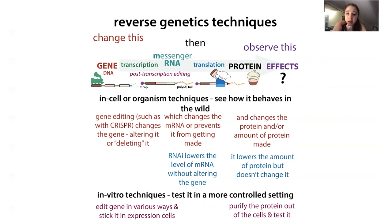We really do need all these different approaches at all these different levels — they feed into one another. If we can understand things at the molecular scale better, it can help us understand things at the population level. And understanding things better at the population level gives insight into what's happening at the molecular level. This is part of the reason I love science and appreciate that different people are enthusiastic about different areas of research and different angles on the same problems.